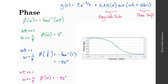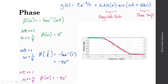Looking at the phase as a function of frequency: at lower frequencies, the phase is at 0 degrees as expected. When omega tau equals 1, the phase is minus 45 degrees. And as frequency increases, it transitions to minus 90 degrees for very large input frequencies. The full curve and its piecewise approximation both show this same form: 0 degrees phase shift at lower frequencies, transitioning to minus 90 degrees at higher frequencies.